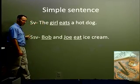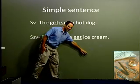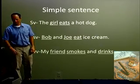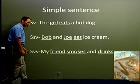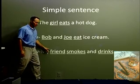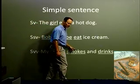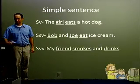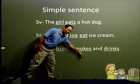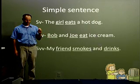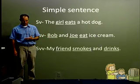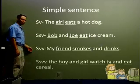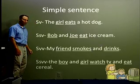So we have SV, we have SSV. Now in this picture, we can see maybe two actions: smoking, drinking. We have SVV — 'my friend smokes and drinks.' Friend is the subject, I have one action, smokes, another action, drinks. And for this last one, if you look way down there in the corner, we have two children, and then we're going to have two actions. They're watching TV and they're eating. So here I have two subjects and two verbs: 'the boy and girl watch TV and eat cereal.'